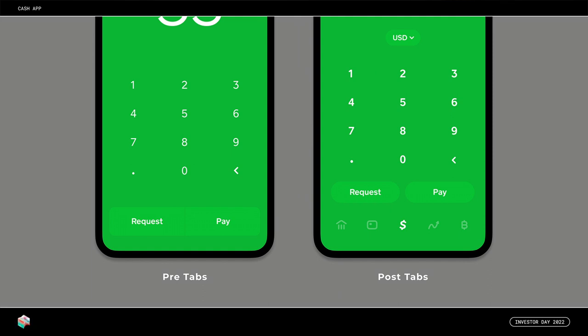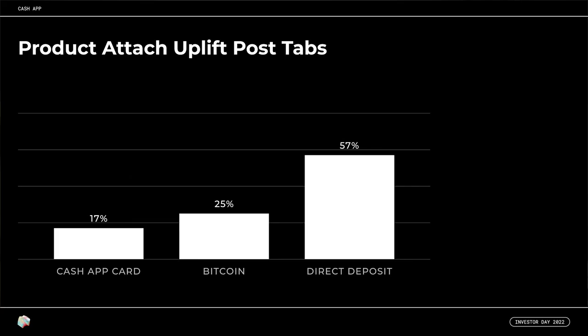In late 2019, we expanded Cash App's navigational architecture to be a more extensible interface with five tabs. We were able to display the full product suite that Cash App had to offer in a more intuitive and organic navigational flow. When we made this change, we saw a dramatic difference in attach rate for some of our products. Looking at two cohorts before and after the tabs rollout from June and October 2019, Cash App card and Bitcoin saw a 17% and 25% uplift respectively, while direct deposit saw a 57% lift as it was two layers removed from the home screen. But we're again reaching the limits of what our current architecture can support, which puts emphasis on just five products.